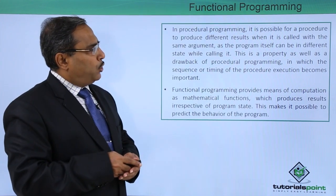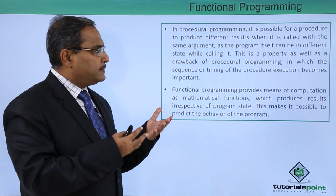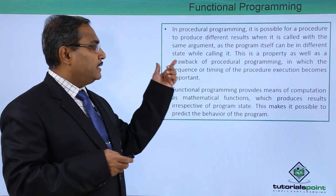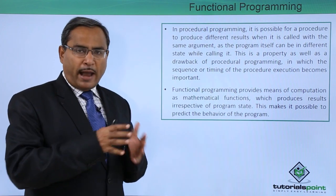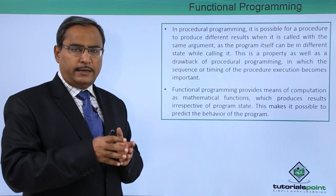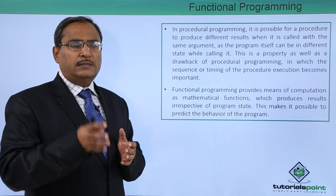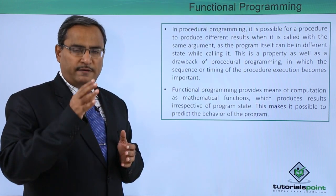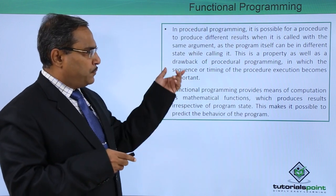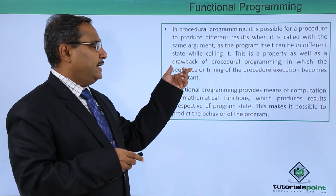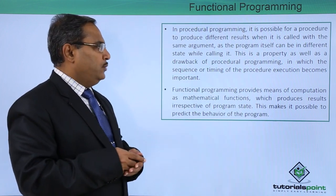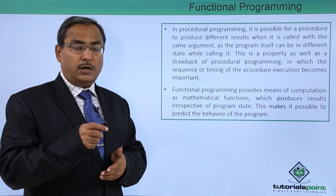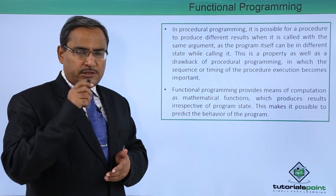In procedural programming, it is possible for a procedure to produce different results when called with the same argument, as the program itself can be in a different state while calling it. That is why it is not mandatory that passing the same arguments multiple times will return the same value, because depending upon the state of the program, the procedure may return different values. This is a property as well as a drawback of procedural programming, in which the timing and sequence of procedure execution becomes very important, and the outcome depends upon the state of the program.